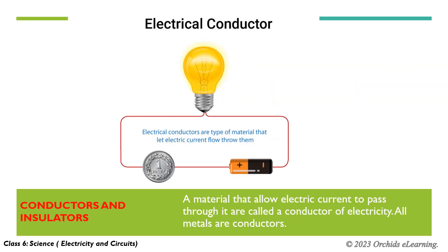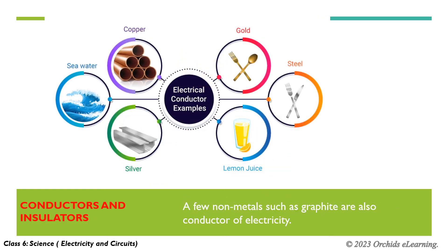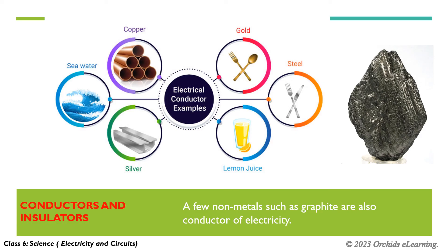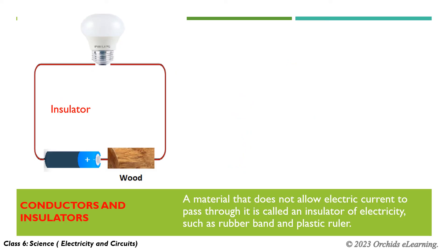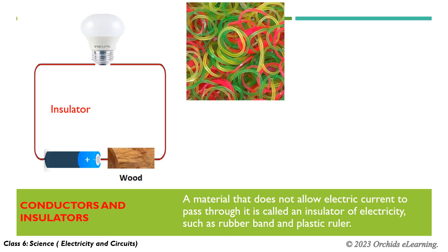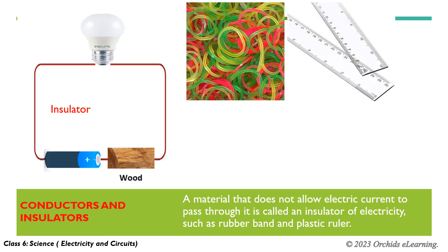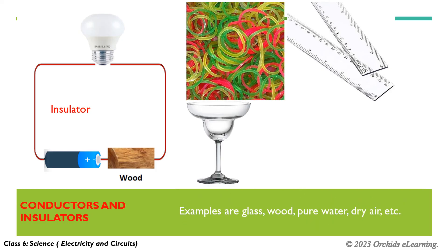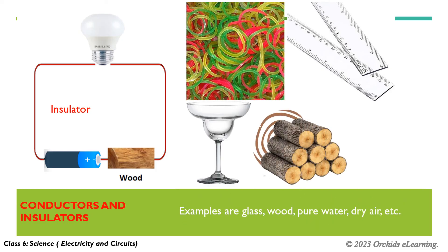Conductors and insulators. A material that allows electric current to pass through it is called a conductor of electricity. All metals are conductors. A few non-metals such as graphite are also conductors of electricity. A material that does not allow electric current to pass through it is called an insulator of electricity, such as a rubber band and plastic ruler. Examples include glass, wood, pure water, dry air, etc.